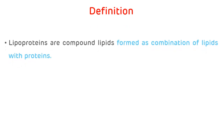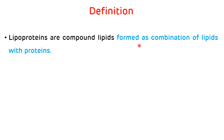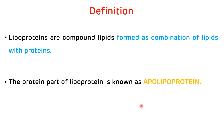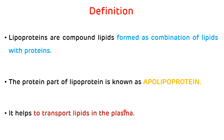First, the definition of lipoproteins. Lipoproteins are compound lipids formed as a combination of lipids with proteins. The protein part of lipoproteins is known as apolipoproteins. These lipoproteins help in the transport of lipids in the plasma.